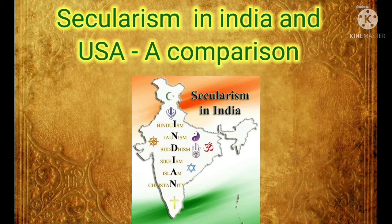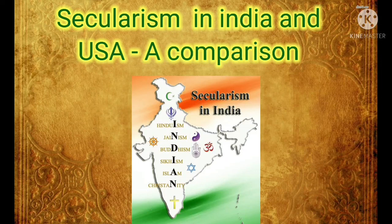To understand this better, let us take the example of old customs like dowry, Sati and untouchability practiced by some Hindus. The government has initiated laws to ban these age-old customs which were turning into social evils. The model of secularism adopted by India is thus more tolerant towards the teachings of the various religions, ensuring no one, whether in majority or minority community, feels threatened by the state with regard to their faith and belief. So a secular country gives a path of progress and harmony all over the world.